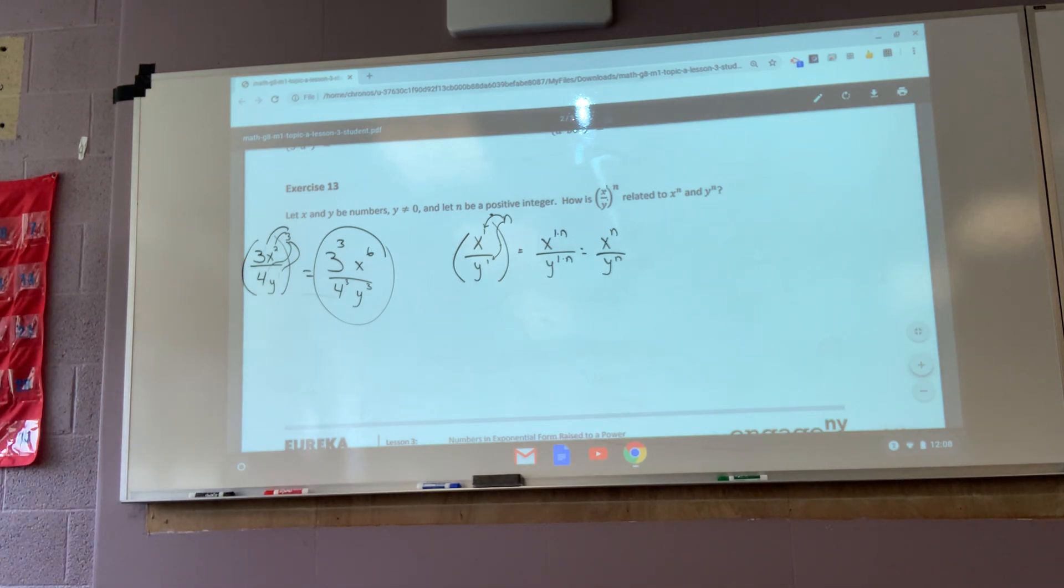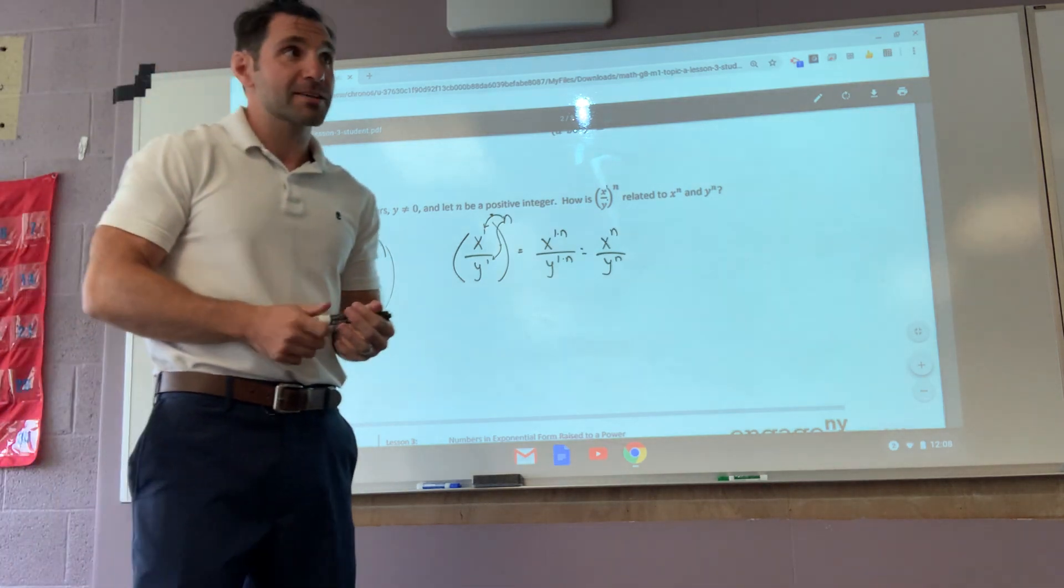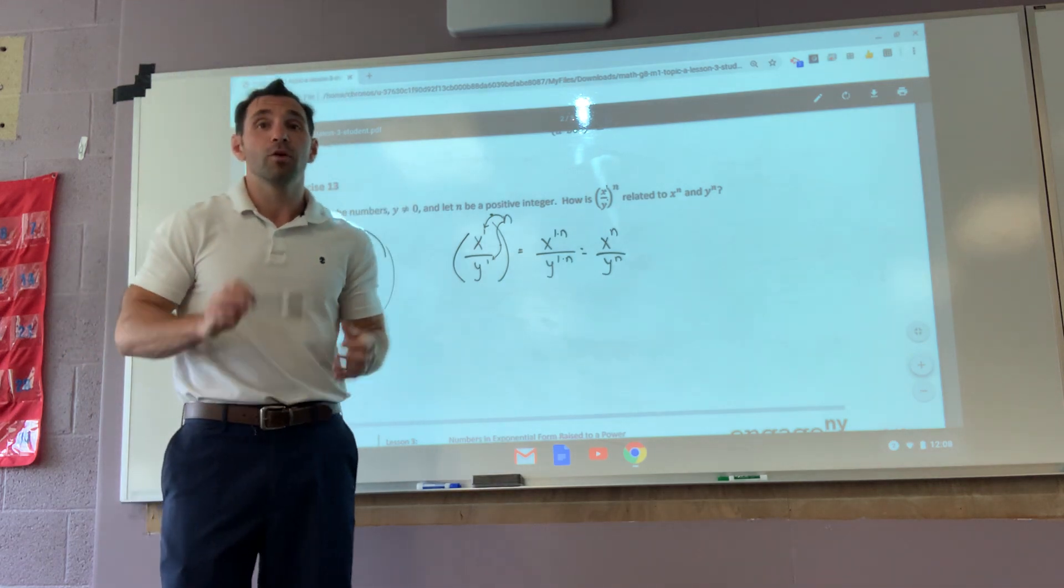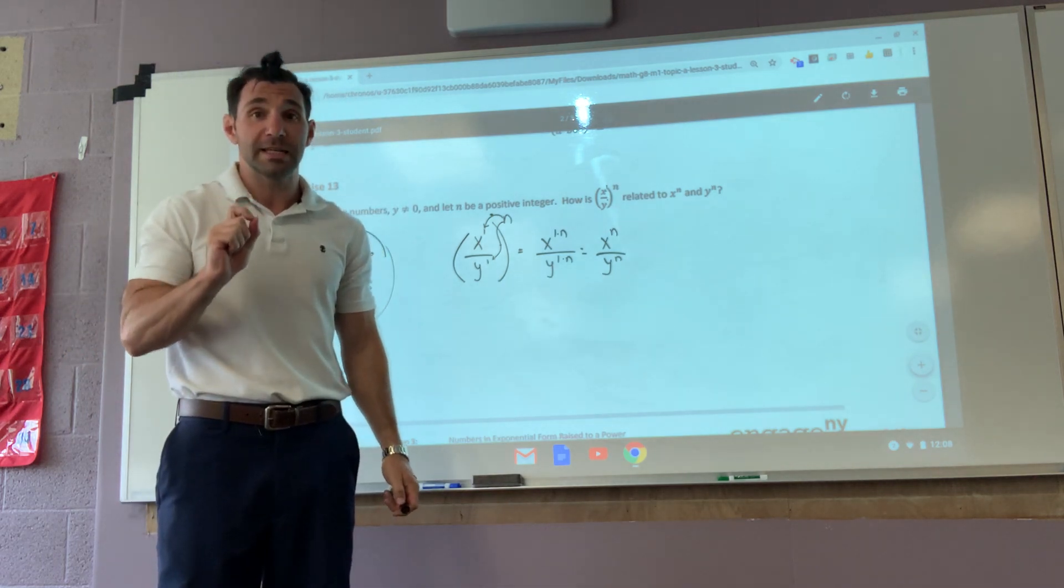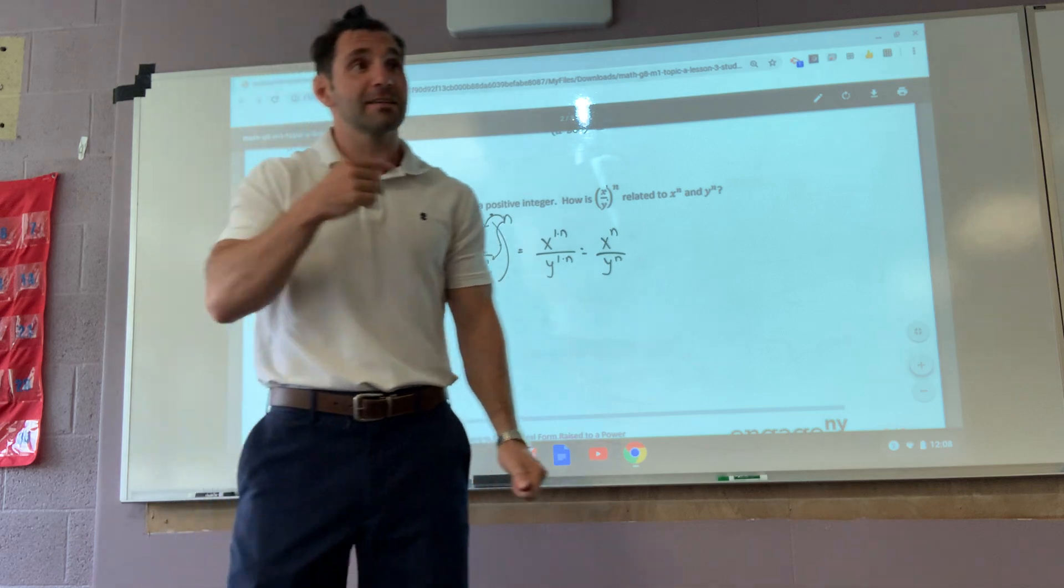So now that you're done with this, there is no homework. You are turning in the exit ticket. There are five questions. You are doing all five. Turn them in. It is a classwork grade. It will be graded for correctness. So exit ticket is on the table. Go ahead and grab it.